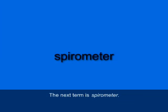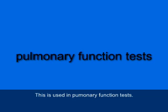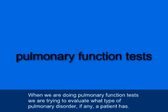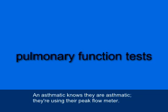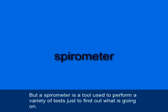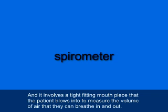The next term is spirometer (S-P-I-R-O-M-E-T-E-R), and this is used in pulmonary function tests. When we're doing pulmonary function tests, we're trying to evaluate what type of pulmonary disorder, if any, a patient has. This is a more involved and general process than the peak flow meter — an asthmatic knows they're asthmatic and uses their peak flow meter. The spirometer involves a tight-fitting mouthpiece that the patient blows into to measure the volume of air they can breathe in and out.